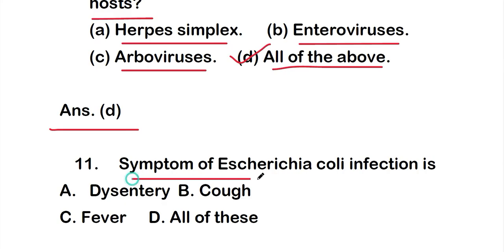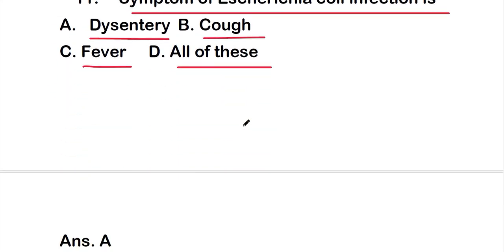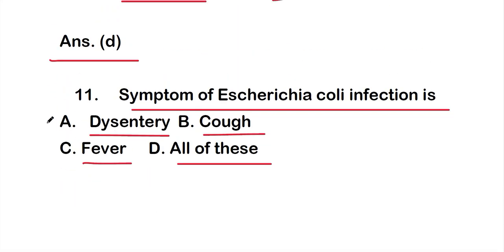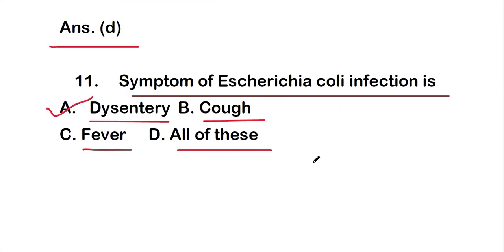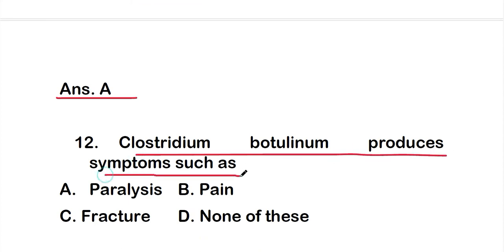Question 11: Symptoms of Escherichia coli infection — option A: dysentery; option B: cough; option C: fever; option D: all of the above. The right answer is option A: dysentery is the symptom of E. coli infection.